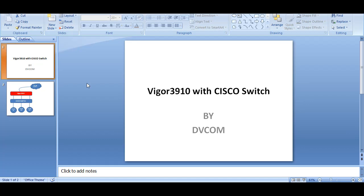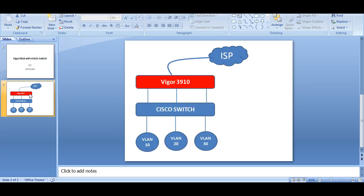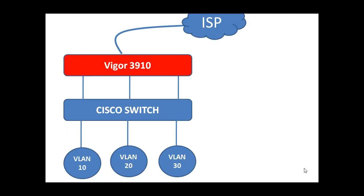Before we start the configuration, let's understand the lab topology. I have a Cisco switch, which is my layer 2 switch, and I am going to configure three VLANs: VLAN 10, 20, and 30. This Cisco switch is going to connect directly with the Vigor3910 router, and from the Vigor3910 router, I am going to connect directly to the internet.